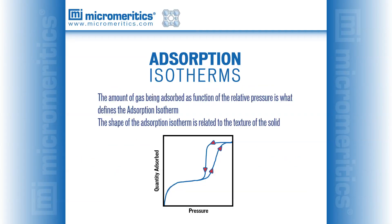Adsorption starts to build up as the pressure of the gas increases. However, we often refer to the relative pressure rather than the absolute pressure. Relative pressure is simply the ratio of absolute pressure to the saturation pressure, the saturation pressure being the vapor pressure of a pure liquid. During an adsorption analysis, the absolute pressure approaches the saturation pressure, which, for the most commonly used gases such as nitrogen and argon, is close to atmospheric pressure. At this point, adsorption is maximized, and as pressure is systematically reduced, desorption occurs. The quantity of molecules adsorbed or desorbed as a function of the relative pressure is known as the adsorption and desorption isotherms, respectively.